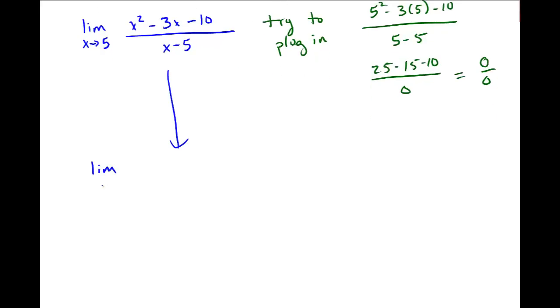I think the bottom is already factored, but I'll go ahead and factor the numerator. I get the limit as x approaches 5 of x minus 5 and x plus 2, I think works, and x minus 5.